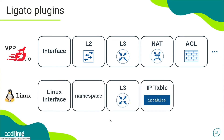Additionally, the following plugins have been implemented for Linux networking. The Linux interface plugin manages Linux-based VIF and TAP interfaces. The Namespace plugin handles Linux network namespace configuration. The L3 plugin supports the configuration of Linux ARP Entries and Linux L3 Routes. And the IPTable plugin manages the Linux IPTables utility.